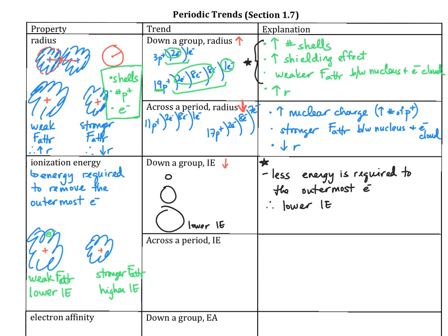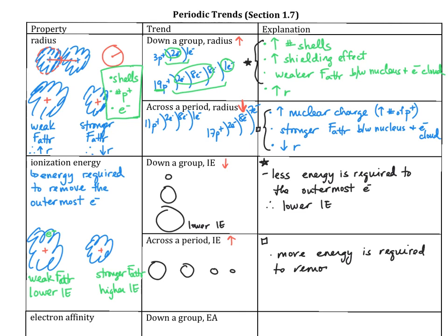Going across the period, the atoms are getting smaller, so it's actually getting harder to remove an electron. As atoms get smaller across the period, the force of attraction is getting stronger. The increased nuclear charge leads to a stronger force of attraction, which means it's going to require more energy to remove that outermost electron — therefore, a higher ionization energy going across the period.